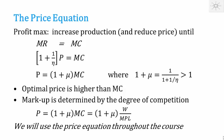The markup depends on the degree of competition: if there are many firms producing similar products, the elasticity is high and the markup is low. The marginal cost equals the wage divided by the marginal product, so we can write the price as (1 + mu) times w divided by the marginal product. This price equation is used throughout the course, so it is very important to understand how to derive it and the intuition behind it.